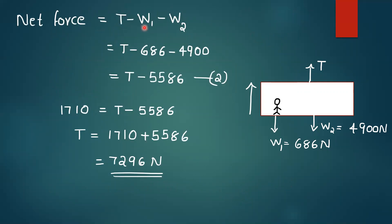T minus W1 minus W2 equals the net force. That means T minus 686 minus 4900, which equals T minus 5586. So 1710 equals T minus 5586. Therefore T will be equal to 1710 plus 5586, that will be equal to 7296 Newton.